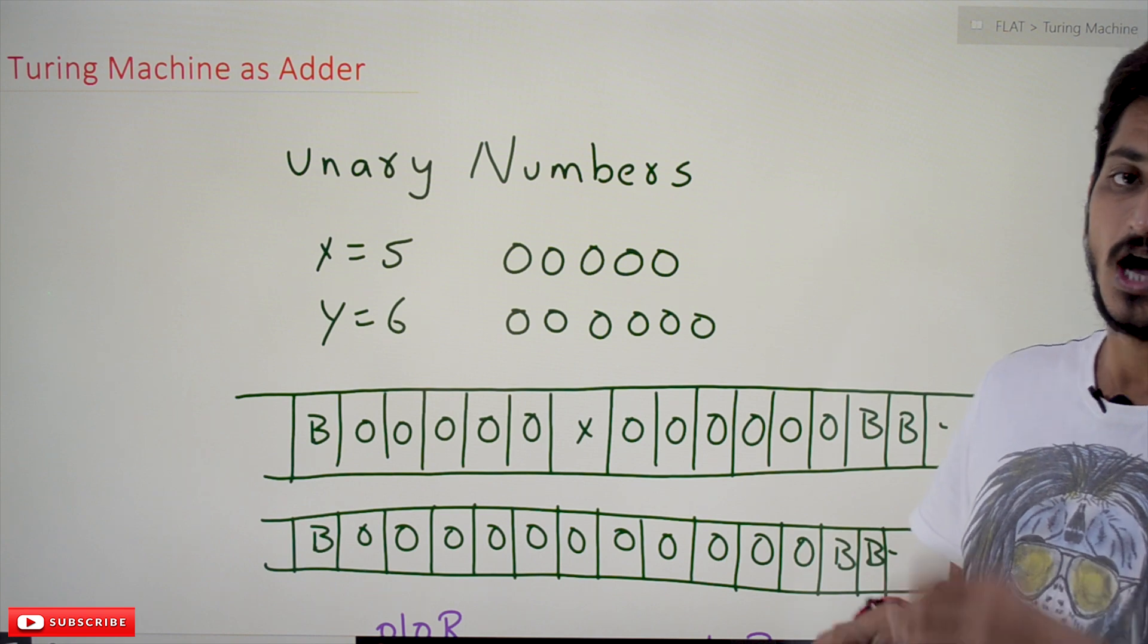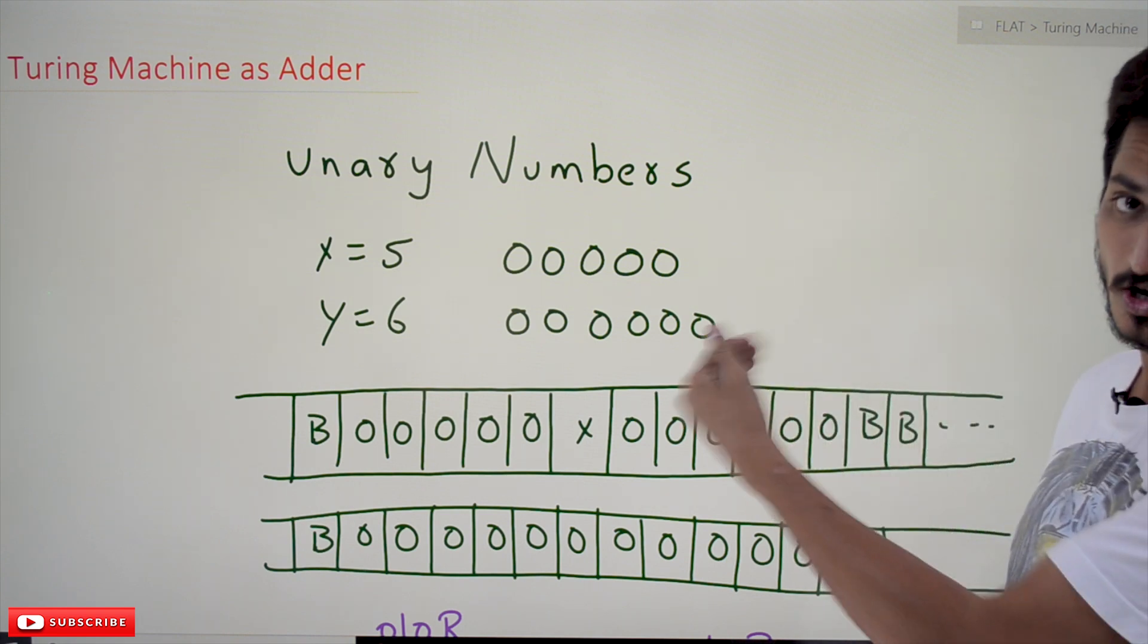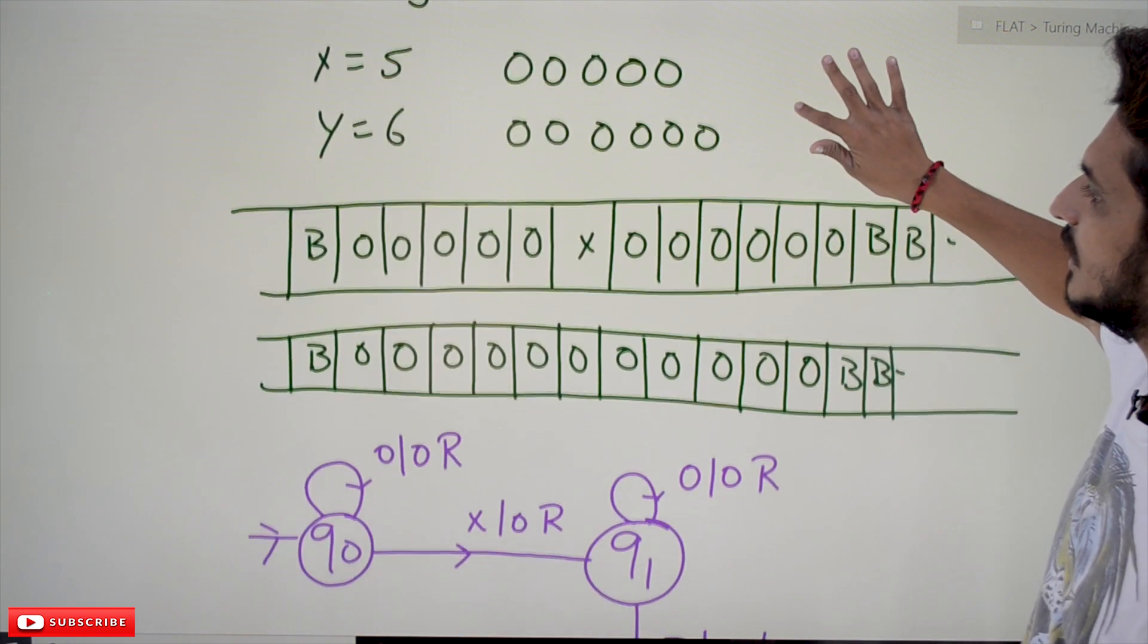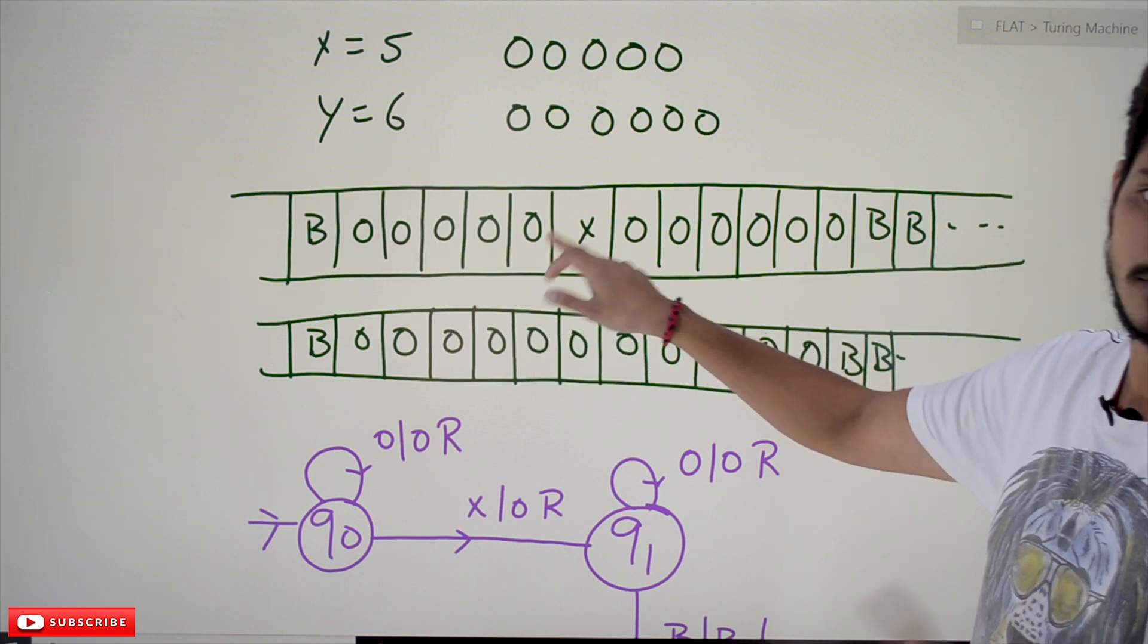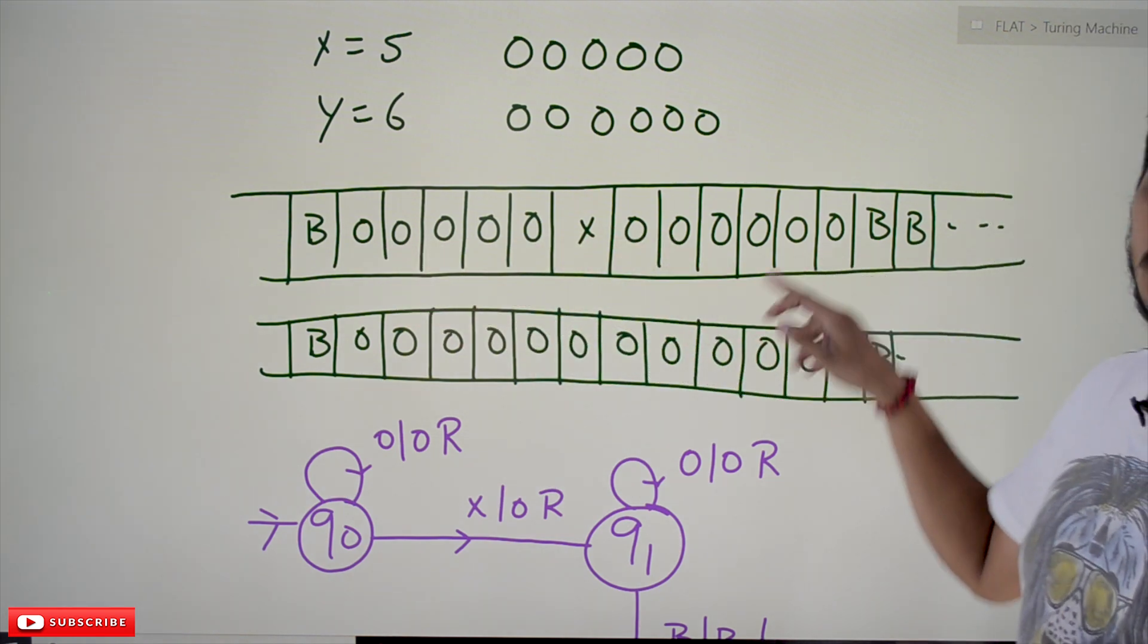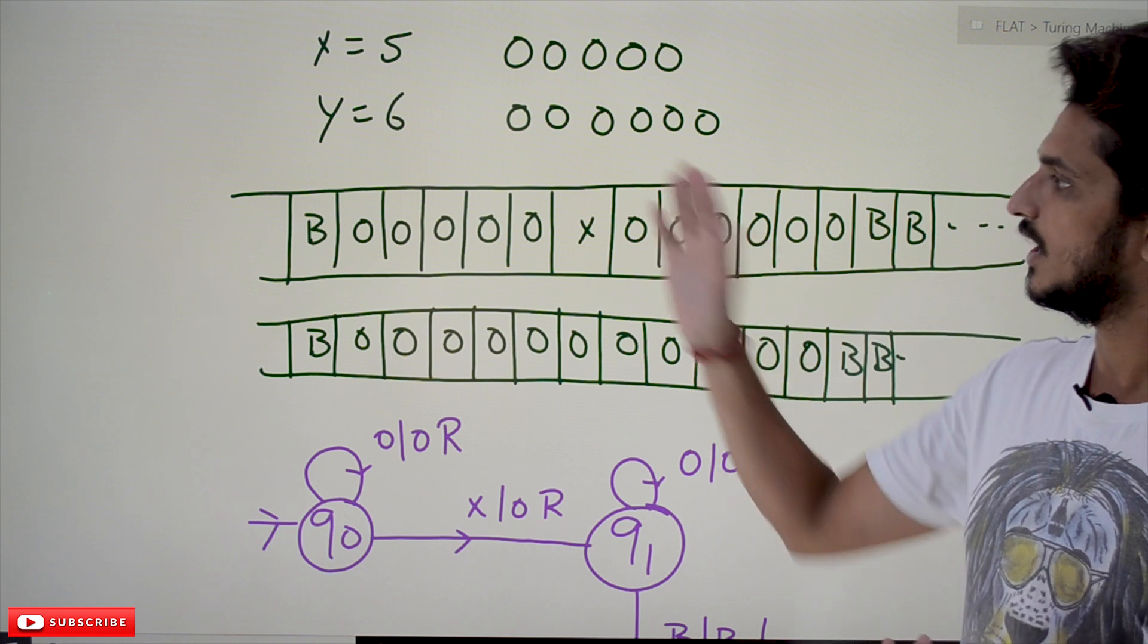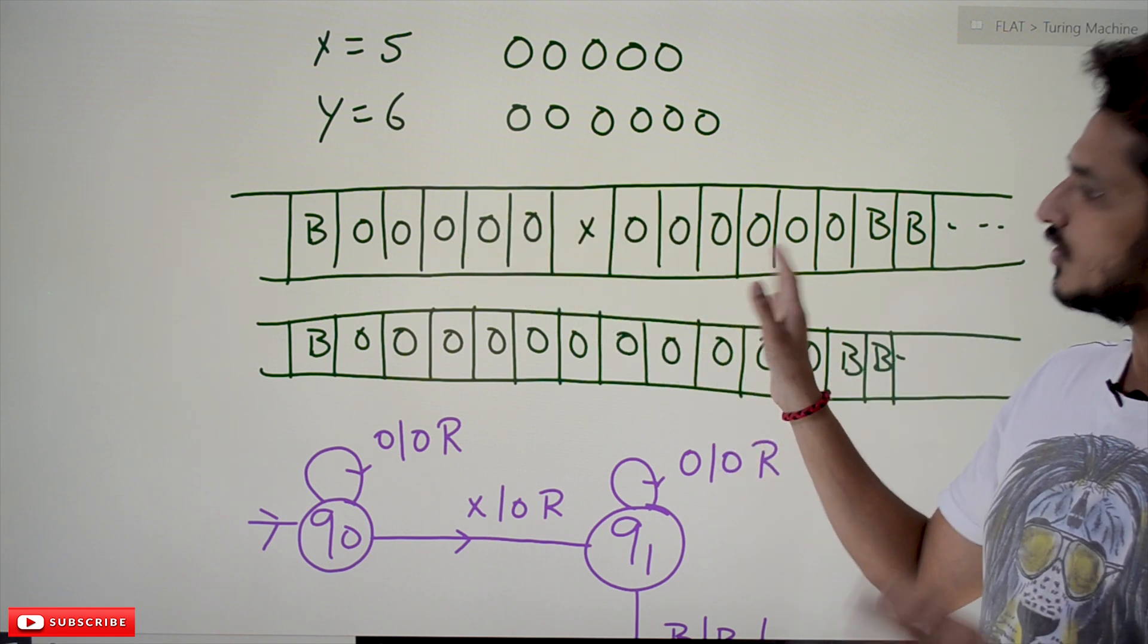How do we represent these numbers on our tape? Let's take the example: five zeros (0 0 0 0 0) - that's five zeros - and six zeros. We have mentioned both the numbers x and y.